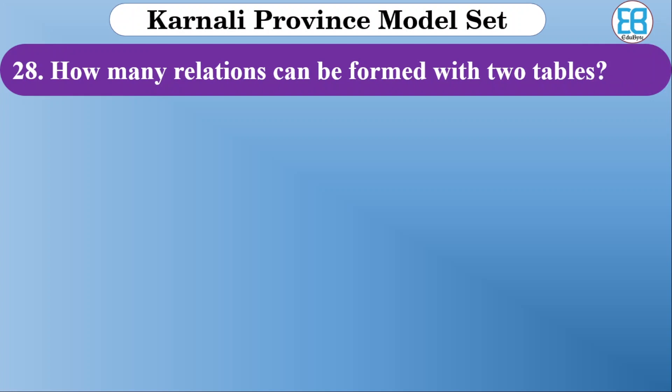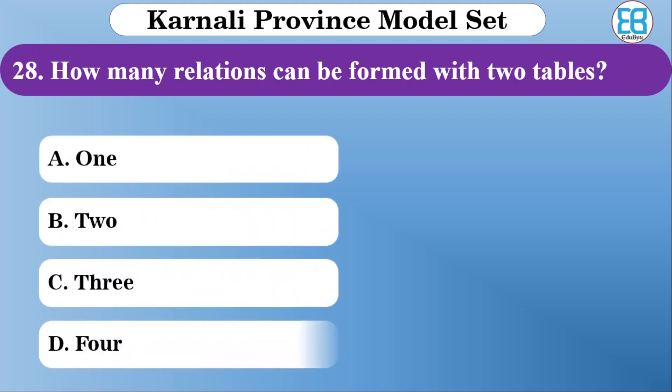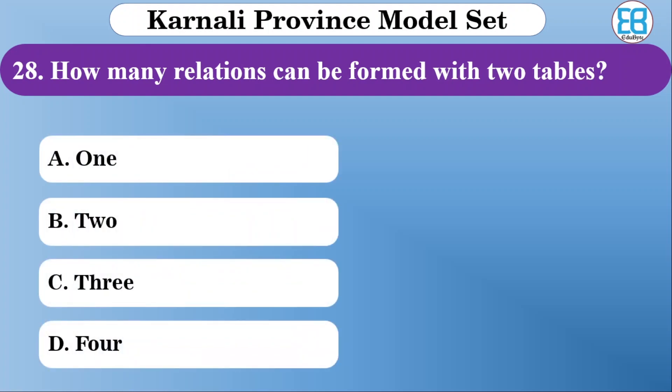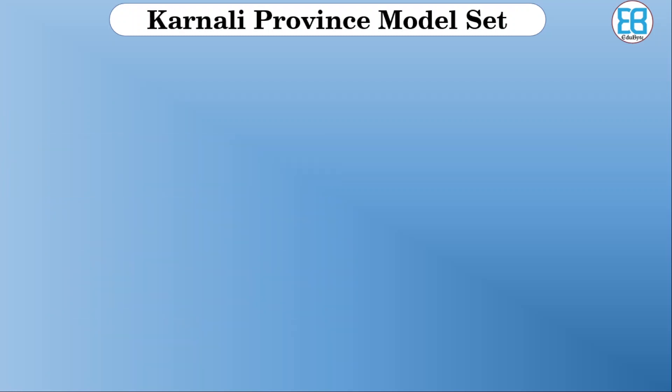How many relationships can be formed with two detail tables? The options are one, two, three, four. The correct option is one — only one relationship can be formed.